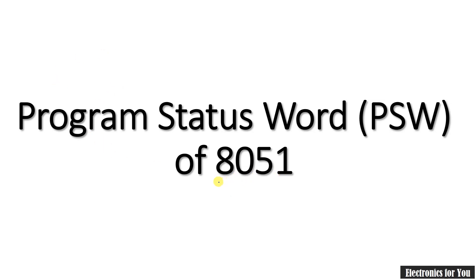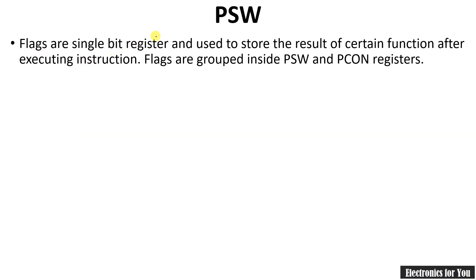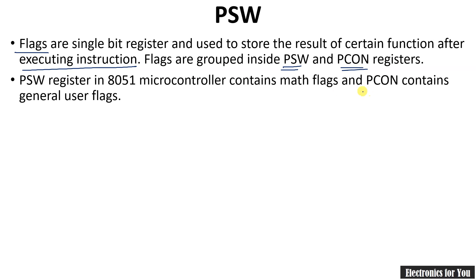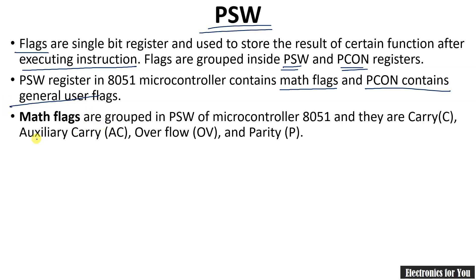Hello friends, welcome to Electronics For You. In 8051, there is a very important register called the Program Status Word (PSW). The PSW indicates the flag status. Flags are single-bit registers used to store the result of certain functions after executing an instruction. In 8051, there are two registers that indicate flag status: the PSW register and the PCON register. PSW contains the math flags, whereas PCON contains the general user flags.